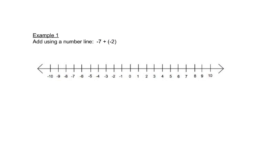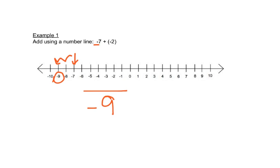In example one, we're going to look at a number line — we're adding negative numbers. The first negative seven says we're starting at negative seven, and then we're adding a negative two. When we say adding a negative two, the negative tells us we need to move two places to the left. So we end up at negative nine. You can see that when we add two negatives, we still get a negative answer; we add the numbers and keep the negative.